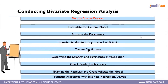To conduct bivariate regression analysis, the first step is to plot the scatter diagram to understand the relationship. Then formulate the general model, estimate the parameters, estimate the standardized regression coefficients, test significance using hypothesis testing, determine the strength and significance of the association, check prediction accuracy, examine the residuals, and cross-validate the model.